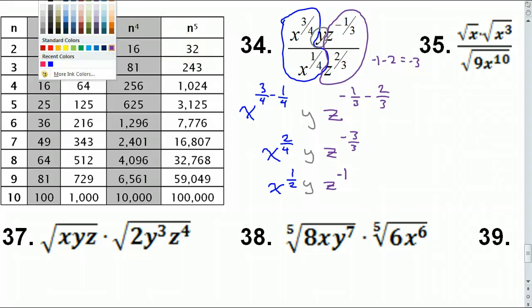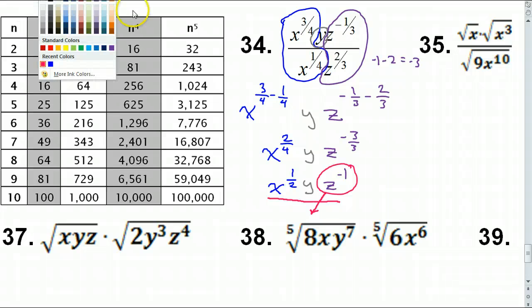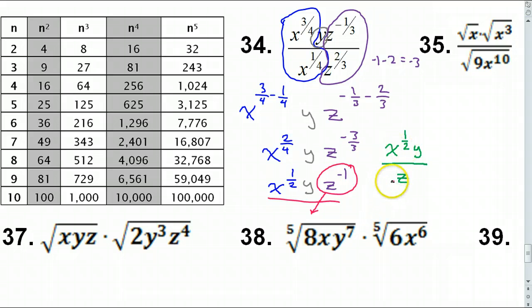Anything with a negative exponent is on the wrong side of the fraction line, so Z drops to the denominator. The final answer is X to the 1/2 power times Y over Z.